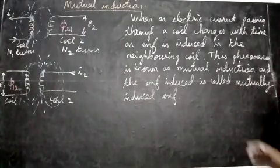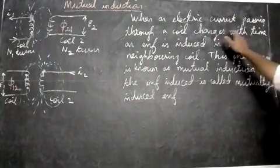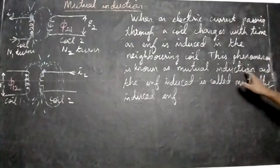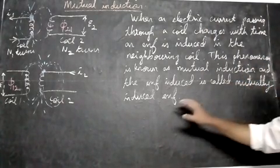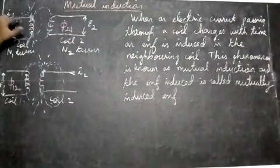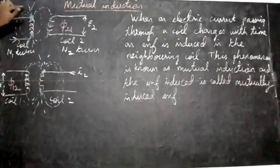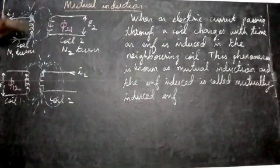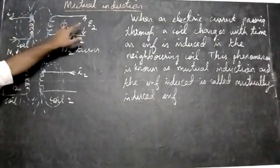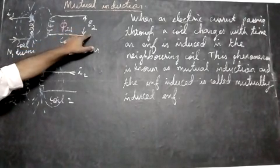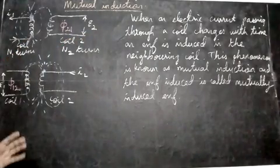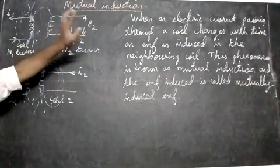Let us now study what is known as mutual induction. When an electric current passing through a coil changes with time, an EMF is induced in the neighboring coil. This phenomenon is known as mutual induction and the EMF induced is called the mutually induced EMF. We have two coils here — coil one and coil two. When electric current passes through the first coil and changes with time, an EMF is induced in the second coil. This phenomenon is known as mutual induction.